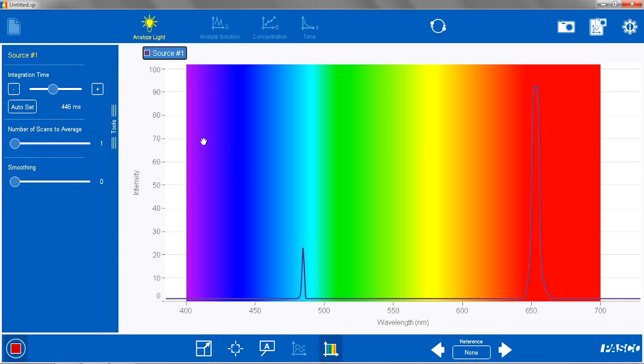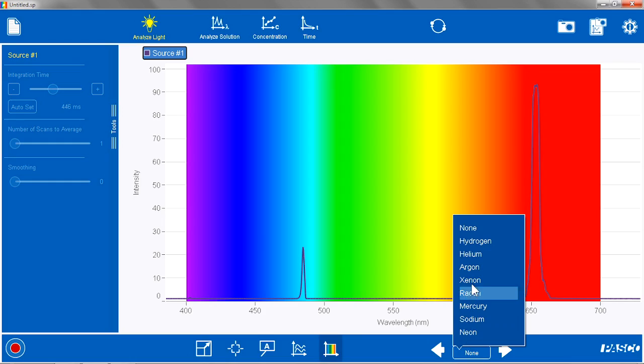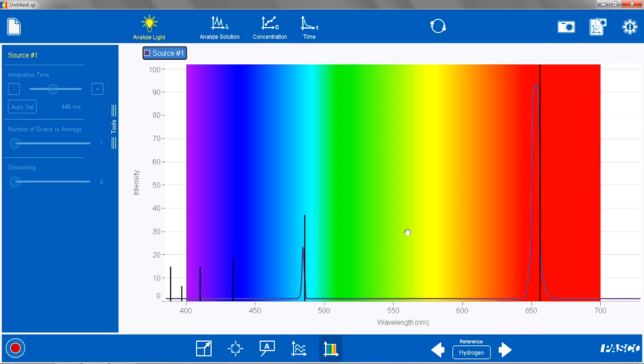There we have it. And there we have a nice spectra. I'm going to hit stop. Now what Tom's going to do, he's going to compare it to a set of built-in reference lines. We're going to see if we can identify these lines as being hydrogen. And there we go. A couple of major peaks of the hydrogen spectra.